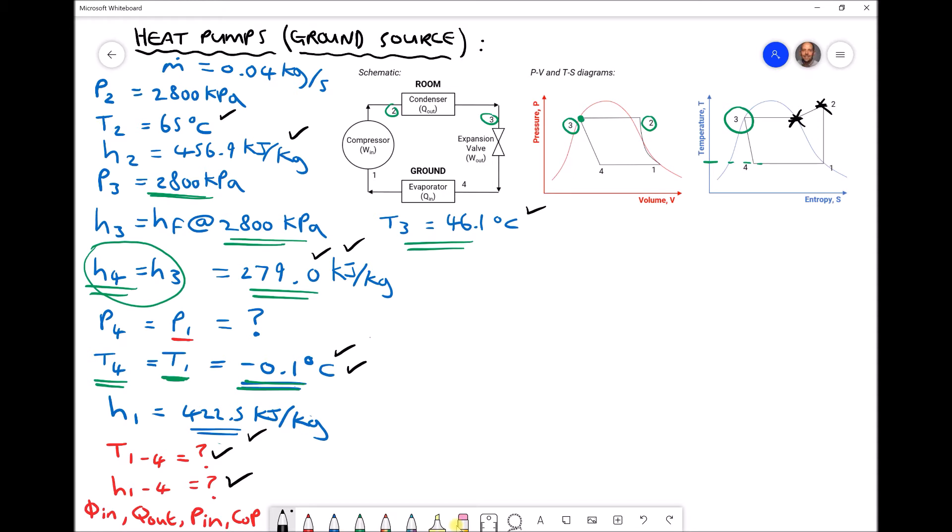All that's left to calculate then is phi in, phi out, P in, and our coefficient of performance. Now thankfully this part's relatively straightforward, and we have the formulas on our equations and information sheet for these.